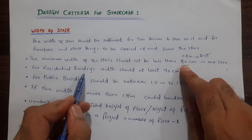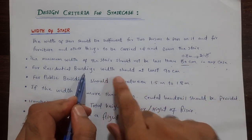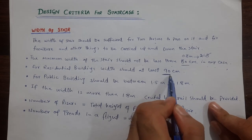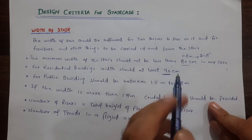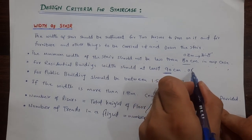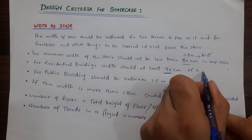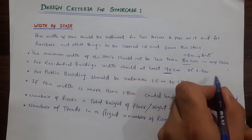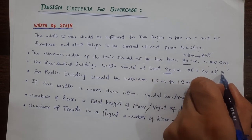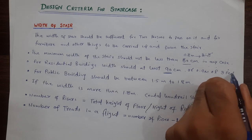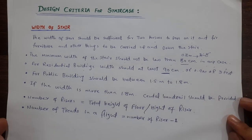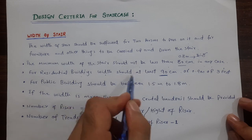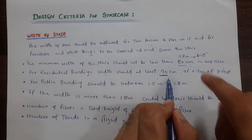For residential buildings, the width should be at least 90 centimeters, or 0.9 meters, or 3 feet. It should not be less than this. For normal residential buildings, width should be at least 90 centimeters.